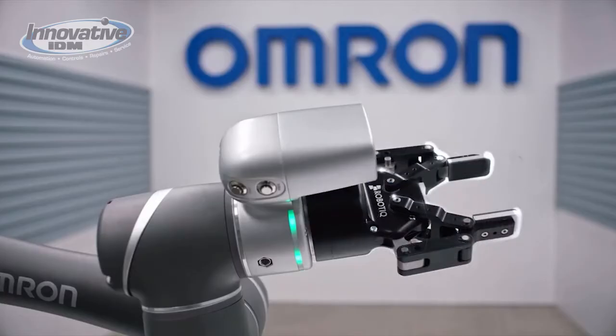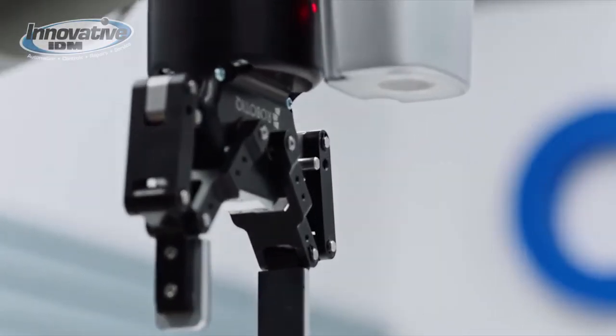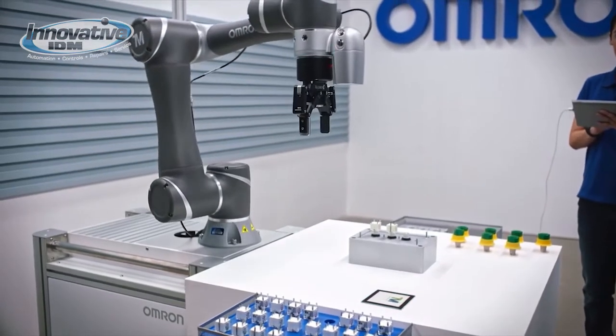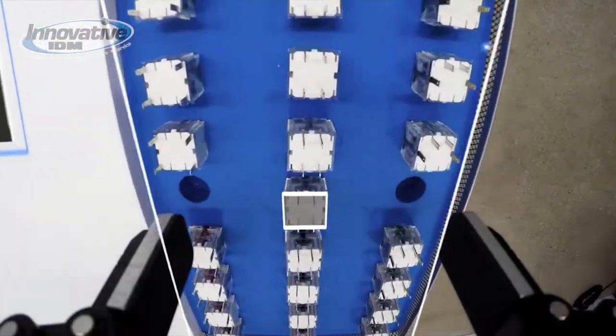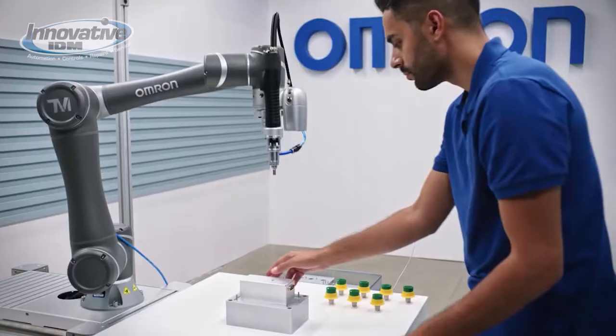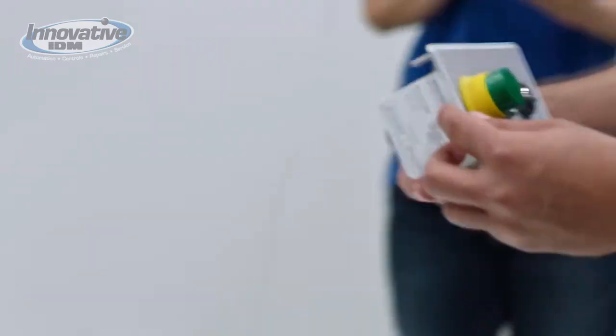You'll notice several different types of grippers and end effectors on the robot in this video. The TM is plug-and-play technology, which means it can connect to a wide variety of readily available grippers and end-of-arm tooling products in the market. This lets you easily integrate third-party peripherals to the robot, significantly reducing time and cost on startup.